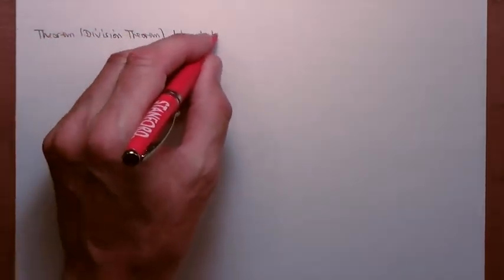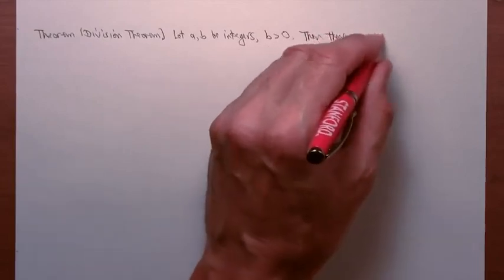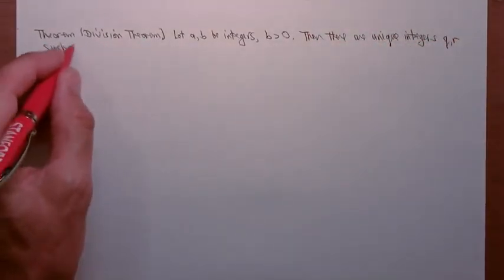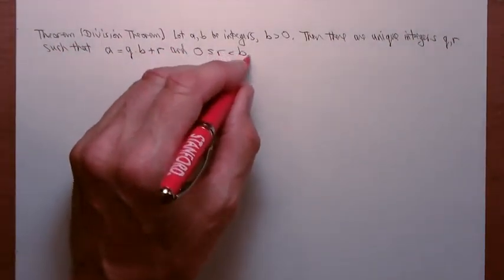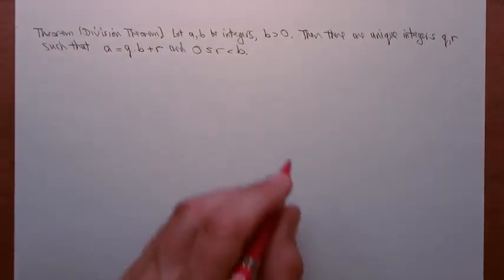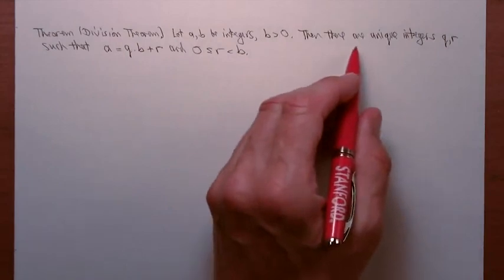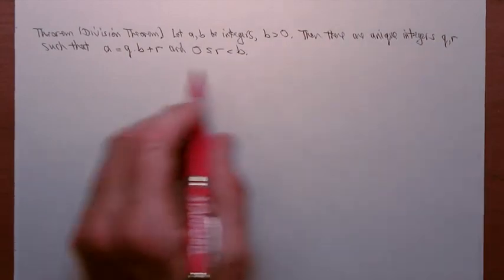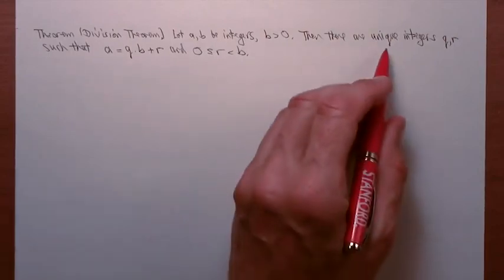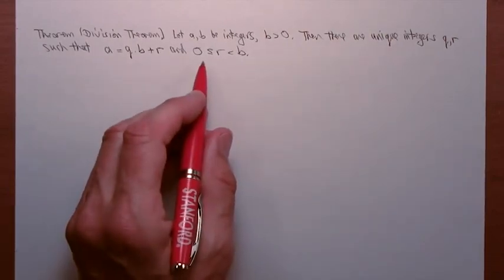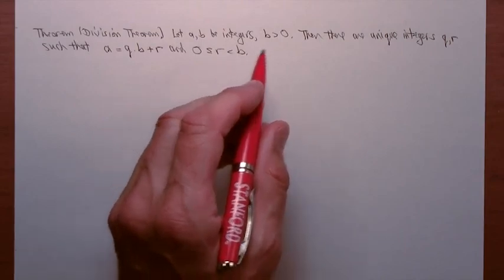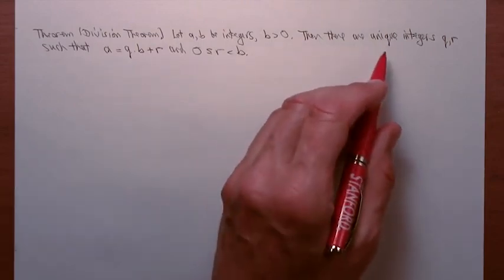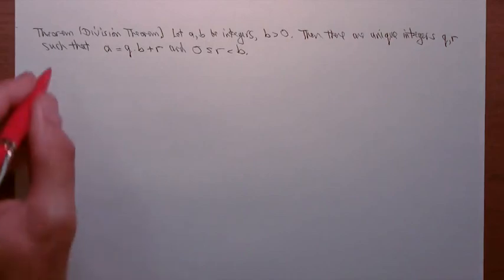The division theorem says the following. Let A, B be integers with B greater than 0. Then there are unique integers Q and R, such that A equals QB plus R, and 0 less than or equal to R less than B. Well, there are two parts to this theorem. There's an existence part: there are integers with this property. And there's a uniqueness part: those integers are unique with this property. In proving the theorem, we're going to take those one at a time. I'll first prove existence, and then I'll prove uniqueness. So I'll prove.